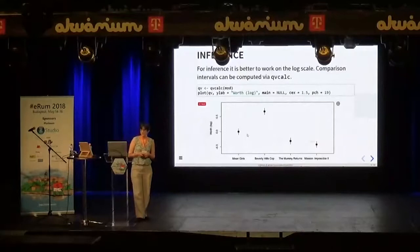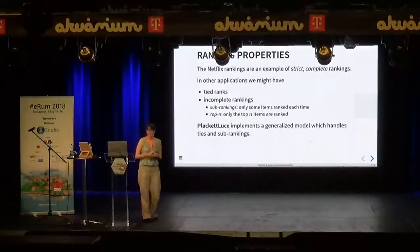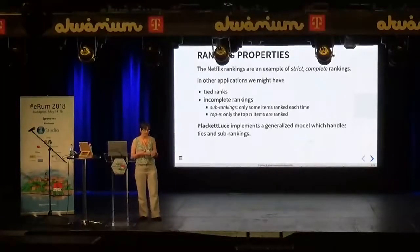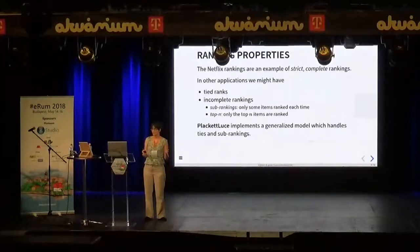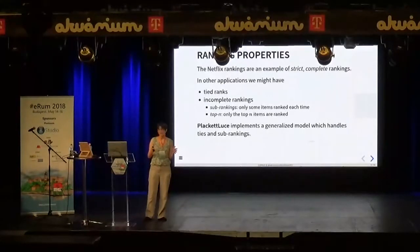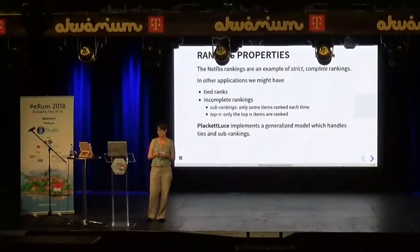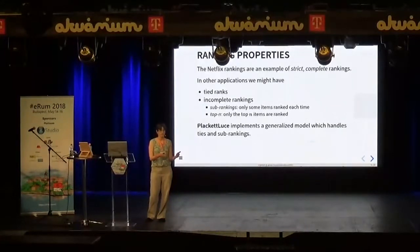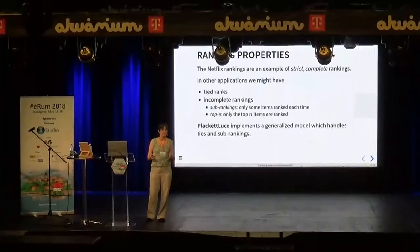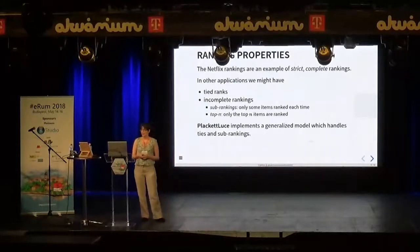That's the standard Plackett-Luce model, which deals with strict, complete rankings — no ties in the data, a strict ordering, and all items appear in every ranking. But in other applications we might get ties, which is quite common in races. We can also have two different types of incomplete rankings: we might only present a certain subset of items to a person, or with a large number of items it's unrealistic to ask people to rank them all, so we say just give us your top five or top ten. PlackettLuce can handle both of these.